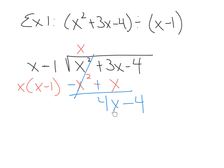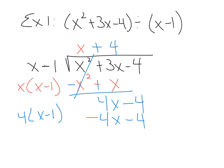x times what makes 4x? That would be x times 4, so I have a positive 4 here. You take this term and multiply it times your divisor: 4 times x minus 1. Distribute that — you get 4x minus 4. When you get to subtract, change the signs: this becomes negative, this becomes positive. The first term should always cancel. It turns out these cancel also, and we have a remainder of 0. Since there's no remainder, we don't need the fraction, and your answer is x plus 4.